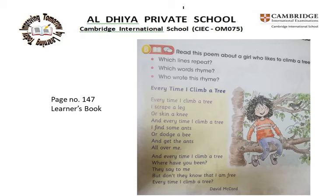Now which words rhyme? Let's look. Every time I climb a tree, I scrape a leg or skin a knee. Tree and knee — these two words rhyme. Let's read and see if there are more rhyming words. Every time I climb a tree, I find some ants or dodge a bee. Tree and bee — these two words also rhyme.